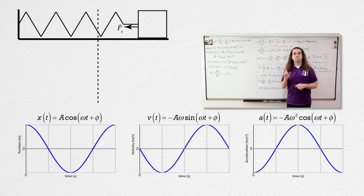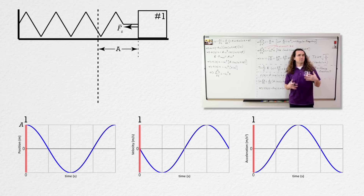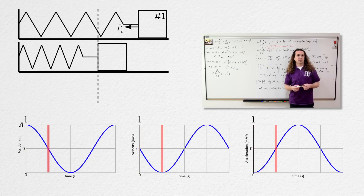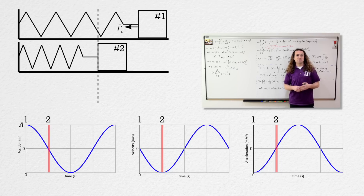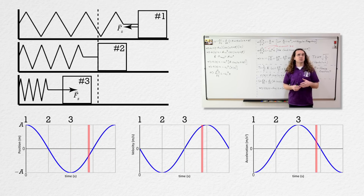If the block is at its maximum displacement from the equilibrium position to the right, this distance is the amplitude — let's call this position number one. The block will then move to the left and eventually be at the equilibrium position — position number two. The block will pass through position two and eventually reach its maximum displacement on the left — position number three. The block will then slide back to position two and then back to one, repeating indefinitely in the absence of friction. This block is in simple harmonic motion.